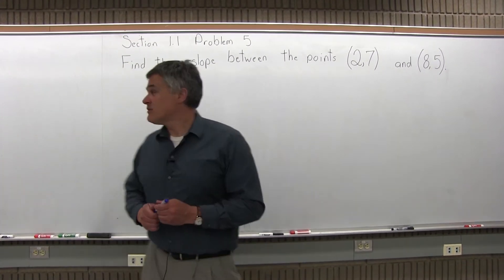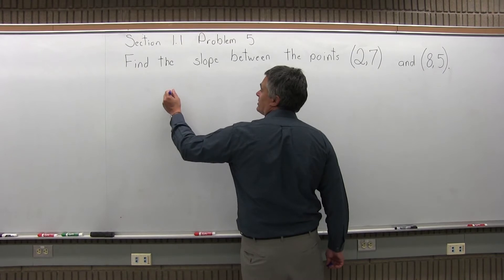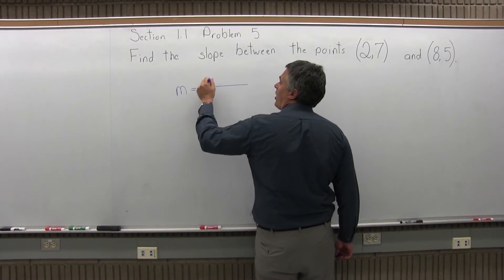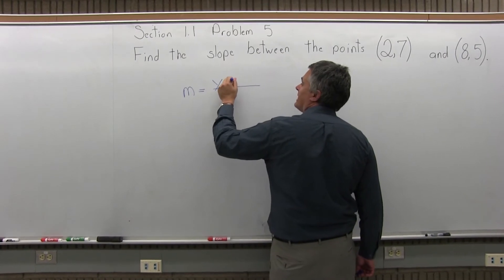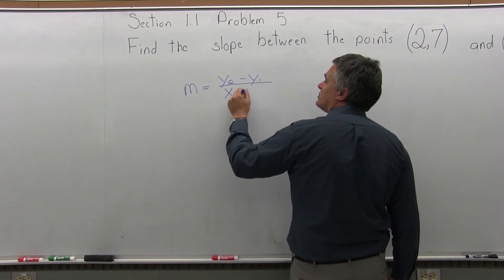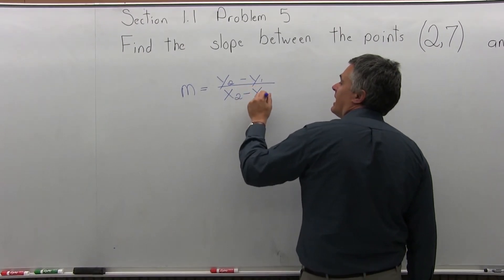To find the slope, there's a formula for slope, and that formula is m equals y2 minus y1 over x2 minus x1.